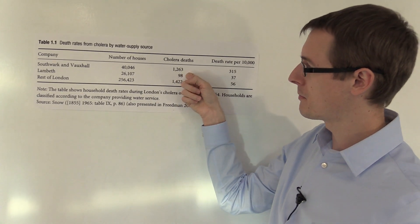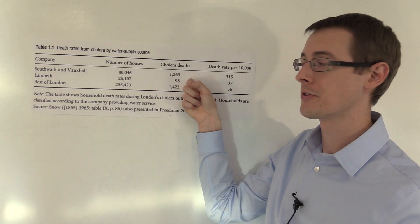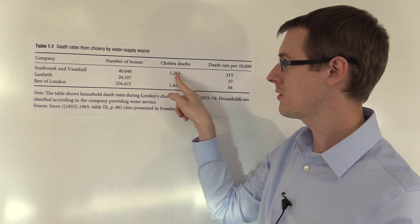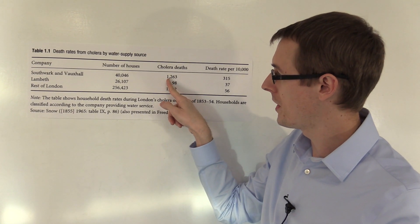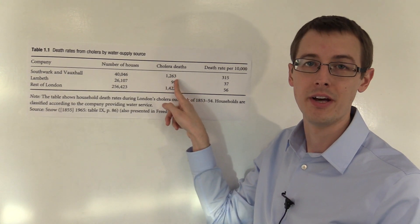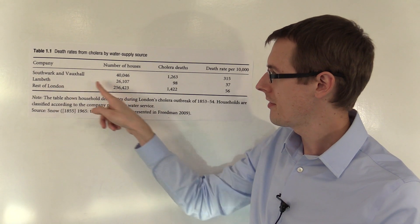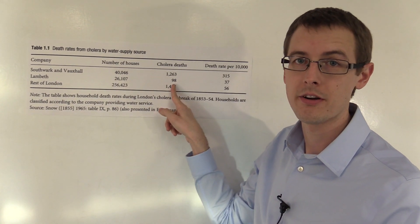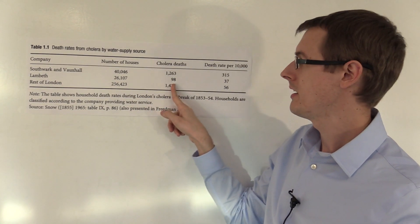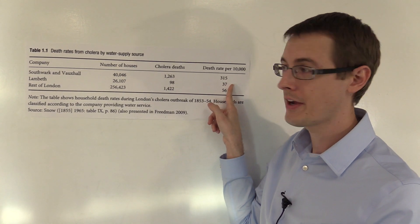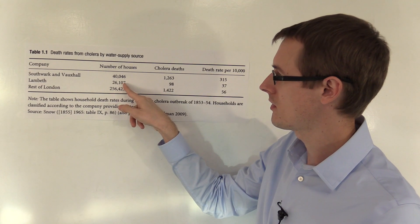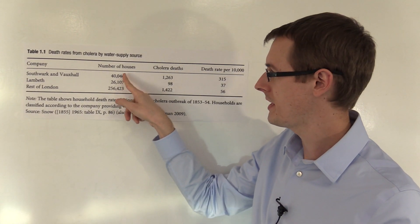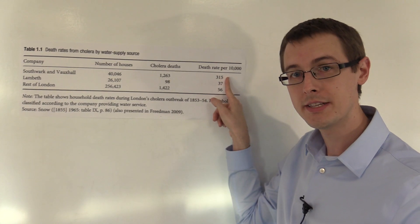Here we've got the number of people who died from cholera in each of the groups. In Southwark and Vauxhall, this is the people who are drinking sewage water. About 1,263 people died. For Lambeth, these are the people who were drinking clean water, 98 people died. You can't directly compare these numbers because there's different total number of people for these different companies.